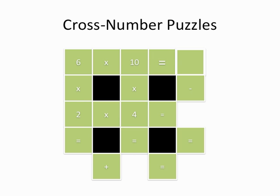What is the product of 6 times 10? This box should have the number 60. Going across the next row, we have 2 times 4, and the product of those two numbers would give us 8.